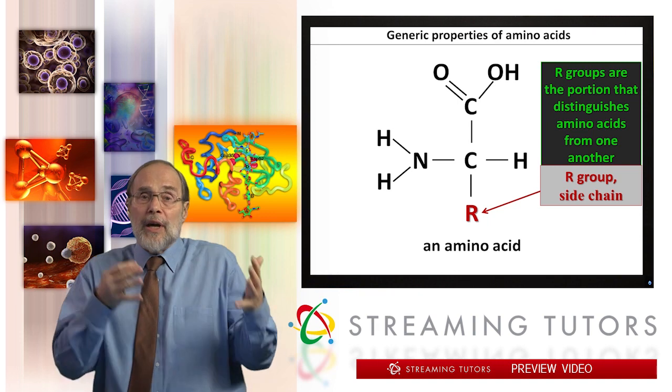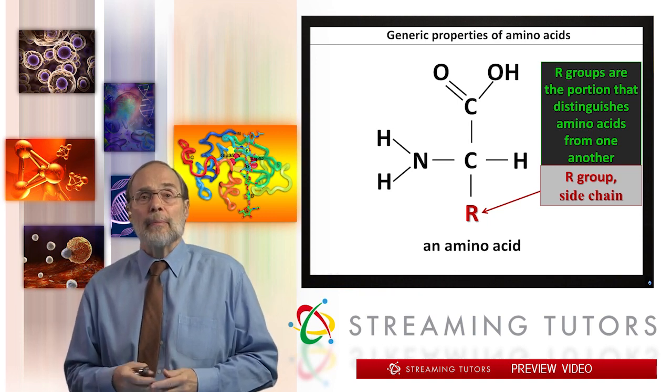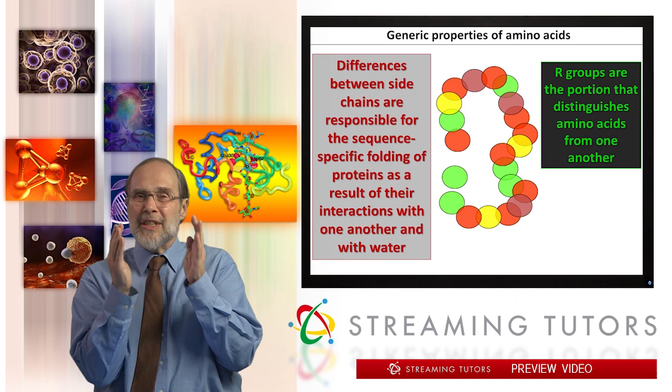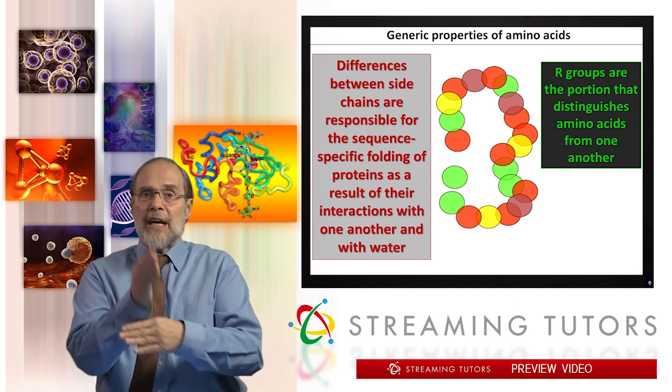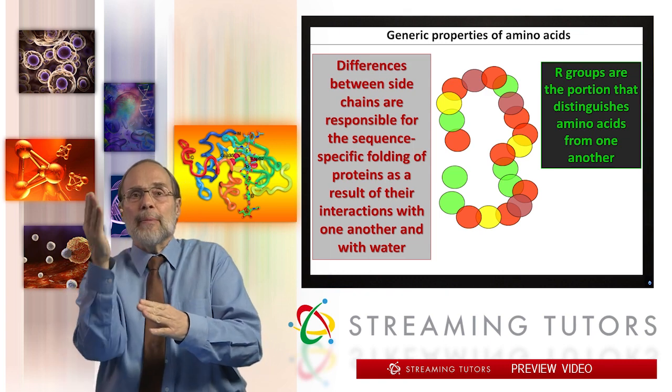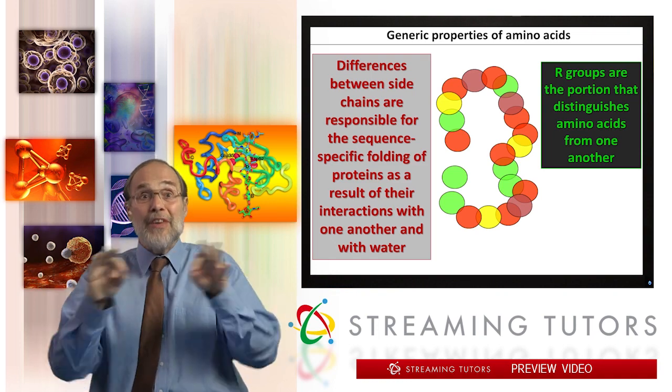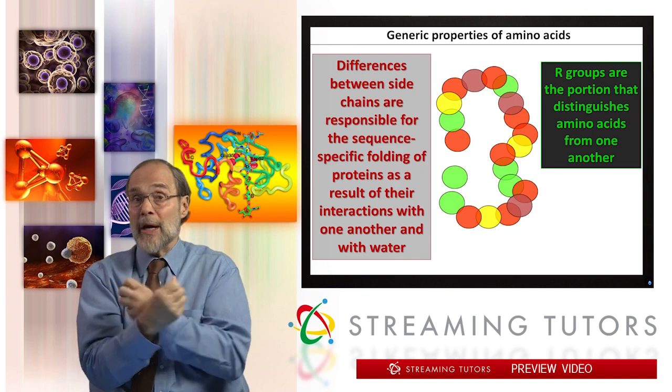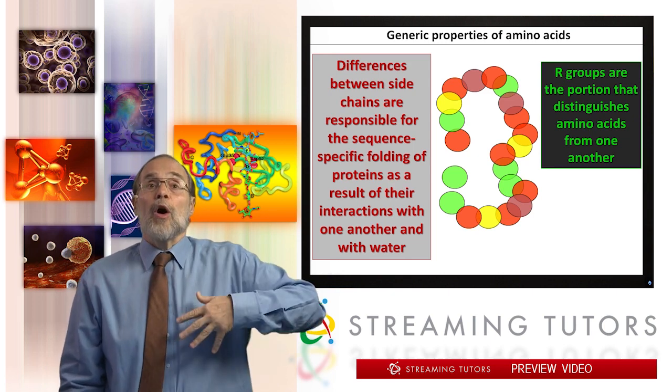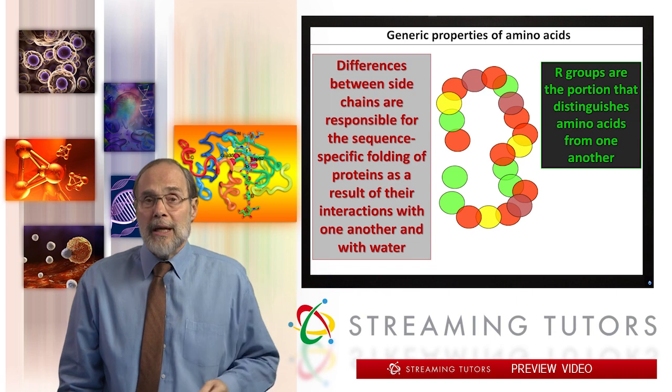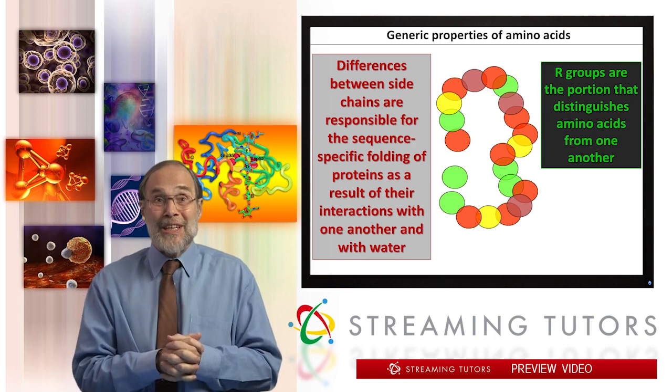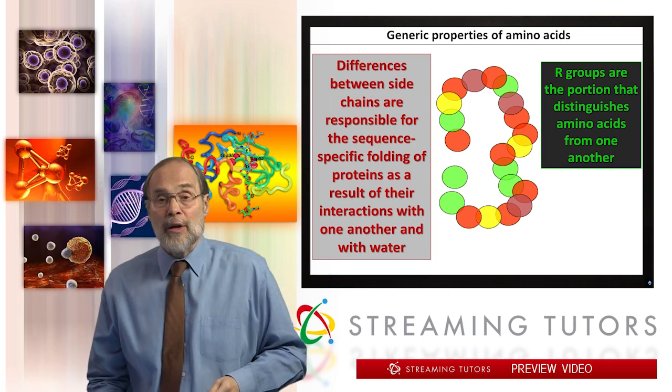It is the R group that distinguishes different amino acid side chains from one another. The different side chains, these R groups, they project outward from the backbone of the polymer as symbolized by the simple little cartoon in the middle here. And because of their different chemical properties, they allow proteins of different amino acid sequences to fold up in different ways and to execute different functions. Amino acid side chains are responsible in one way or another for almost every function that any protein engages in.